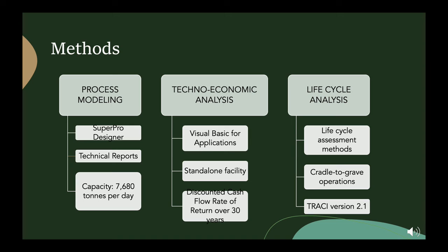The system boundary considered is from cradle to grave — we accounted for the carbon dioxide sequestered into the biomass during cultivation, all upstream emissions associated with production and distribution, and combustion of the fuel. The cumulative emissions for the process were grouped into 10 categories of environmental impacts via the U.S. EPA's Tool for Reduction and Assessment of Chemicals and other Environmental Impacts, or TRACI version 2.1.